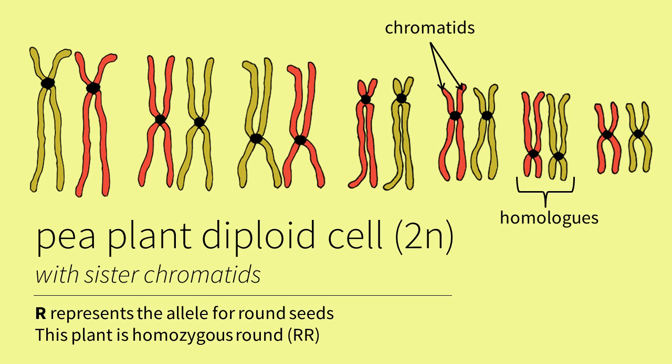If a pea plant's phenotype is homozygous for round seeds, we can denote its genotype with two capital Rs. The phenotype is the physical or physiological description of a trait, and the genotype is the genetic makeup for that trait. So here the capital R stands for the dominant allele.